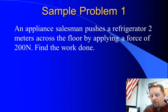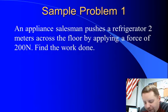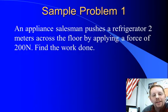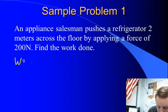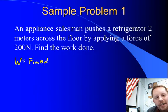In sample problem one, an appliance salesman pushes a refrigerator two meters across the floor by applying a force of 200 newtons. Find the work done. Well, since the force and the displacement are in the same direction, the angle between them is zero. So work, which is F cos theta D, well cos theta is going to be cos zero degrees.